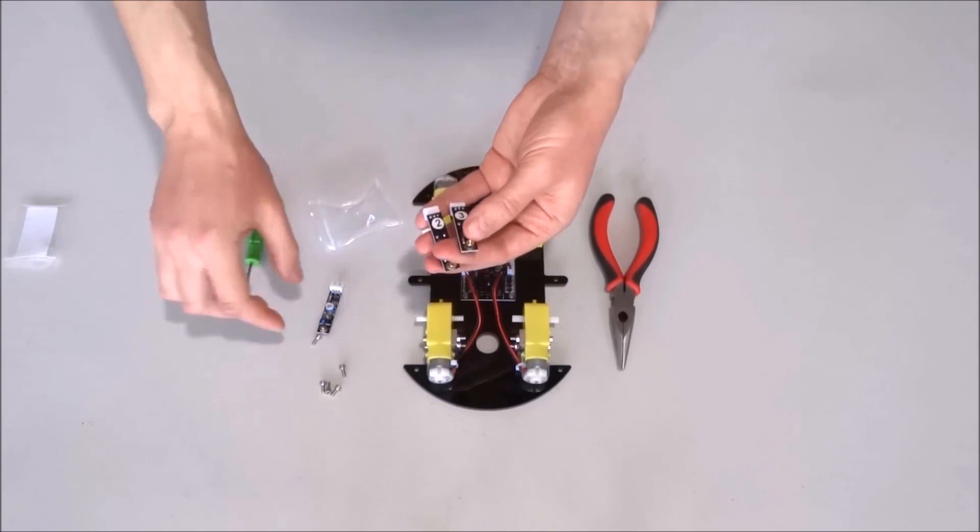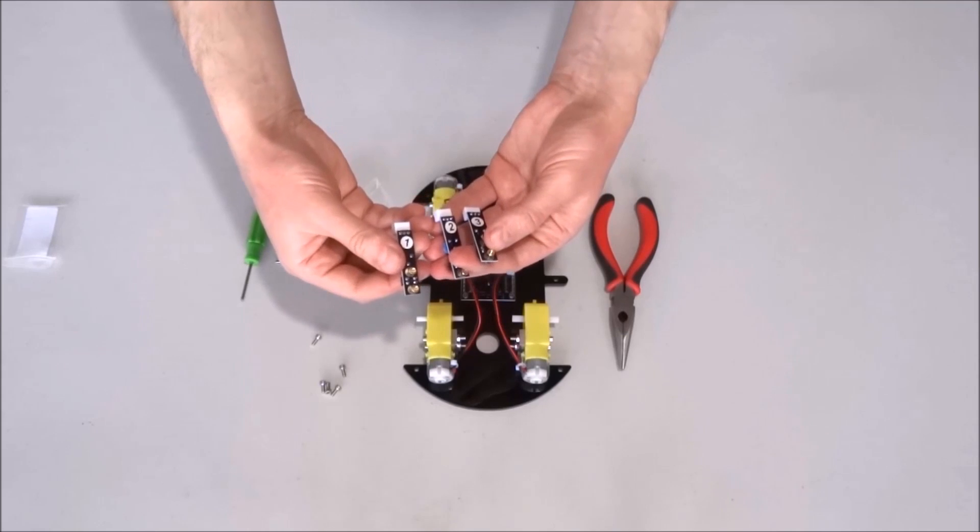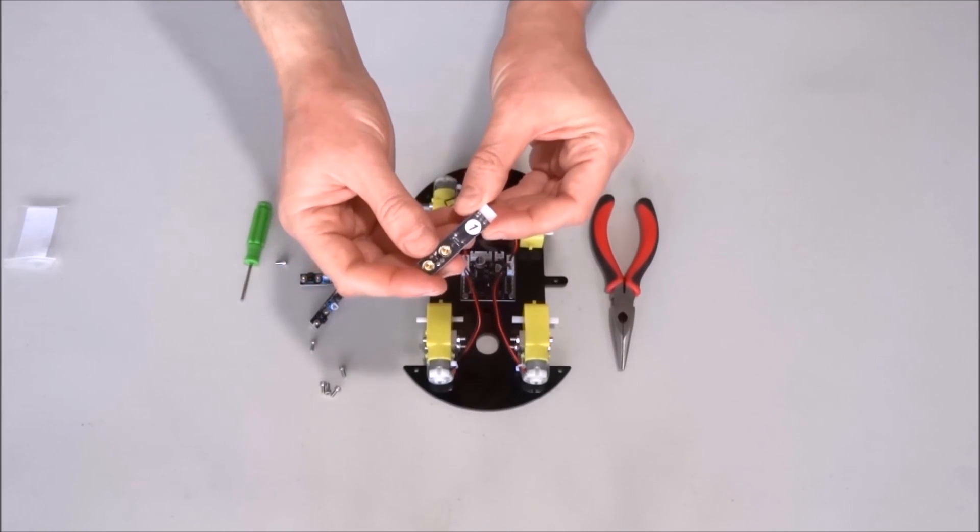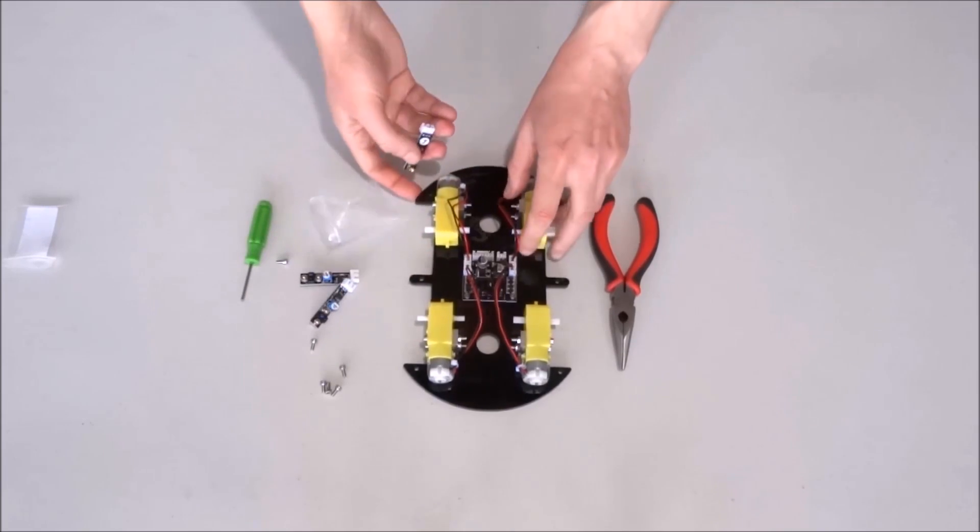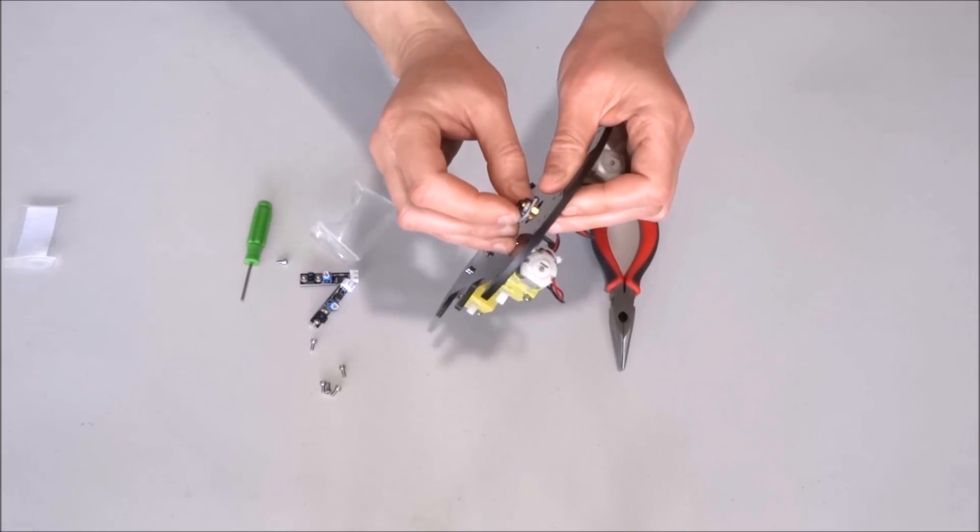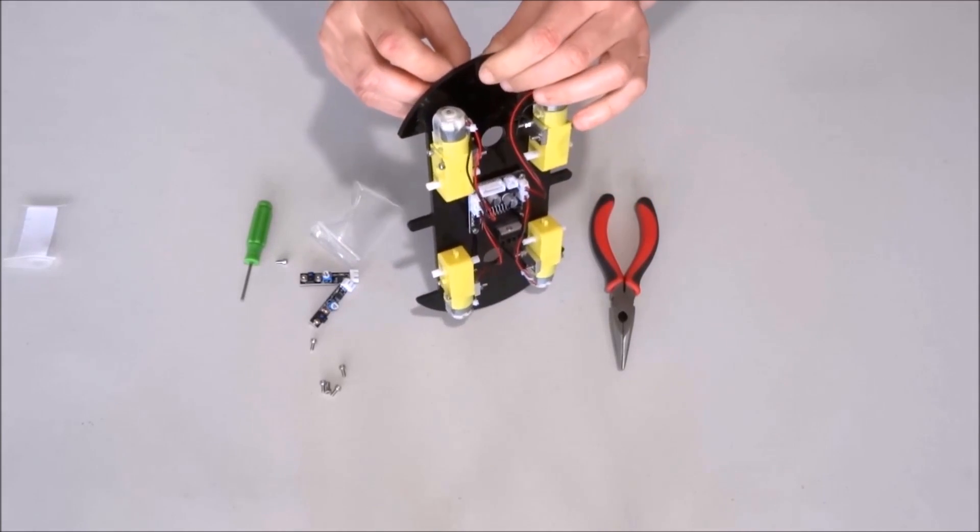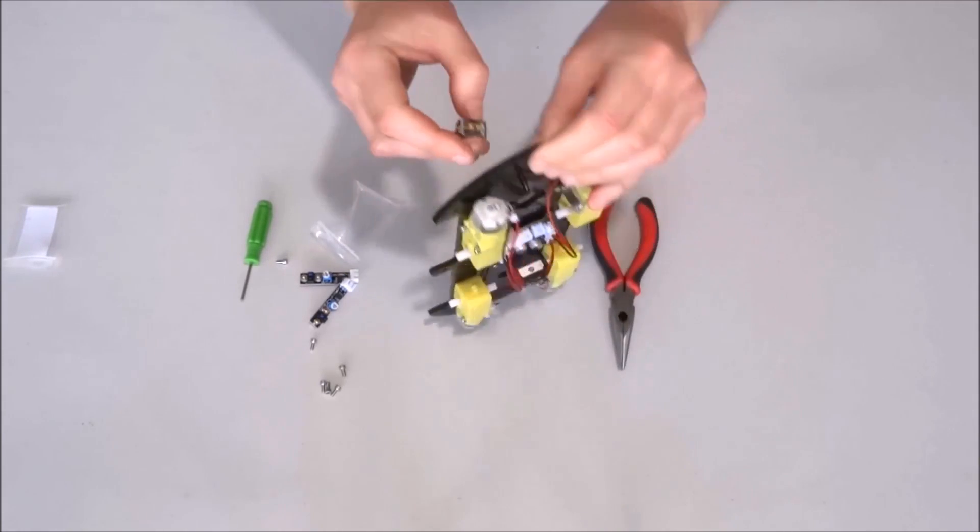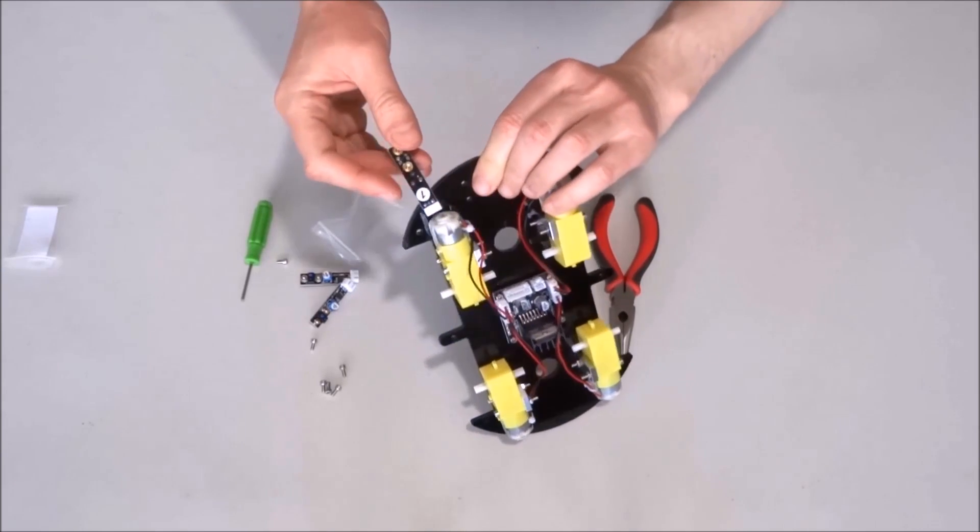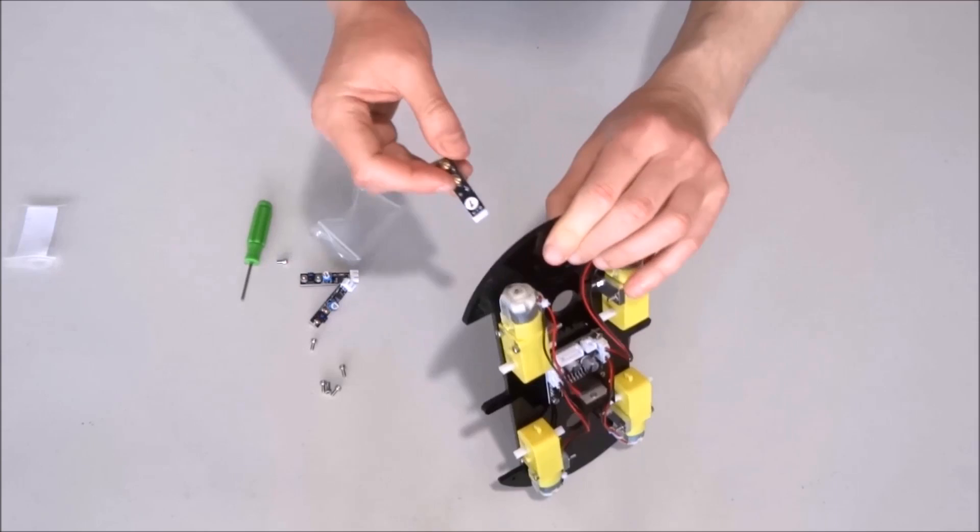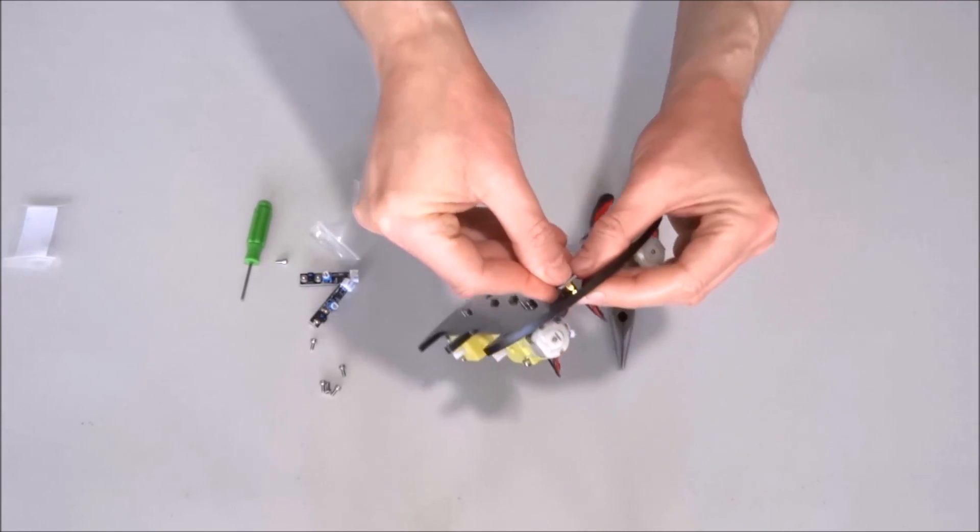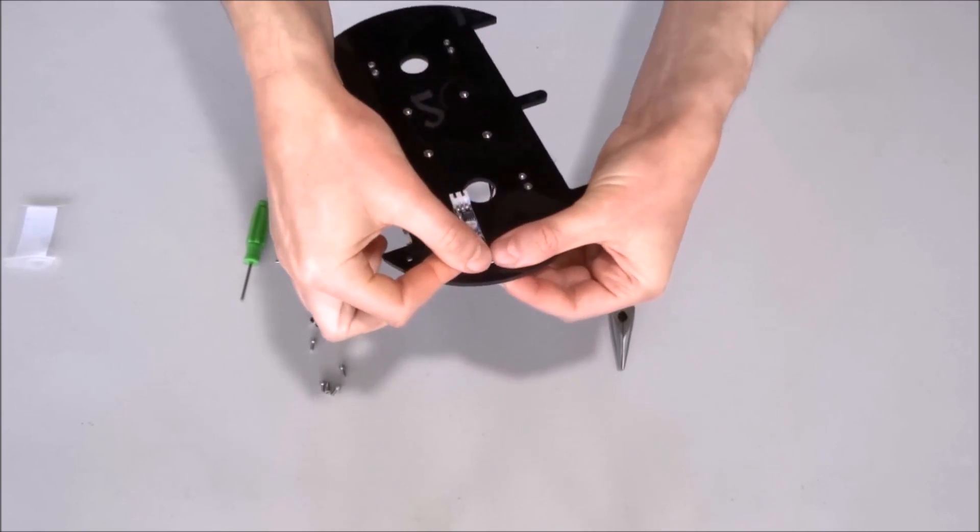All three of them are ready. We'll take the one that is labeled one and we'll mount it right here on this side of the chassis. There are two holes corresponding to the two spacers. We'll place the sensor underneath the chassis like this.